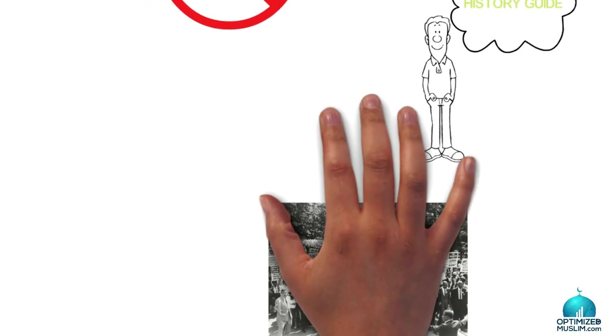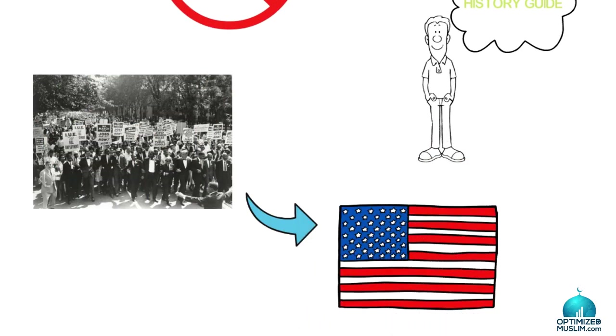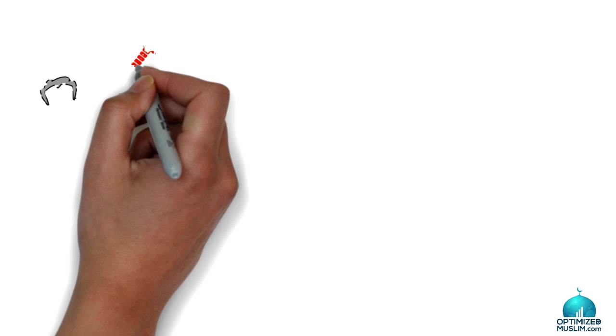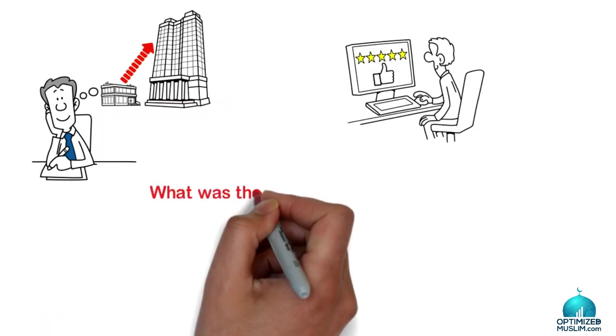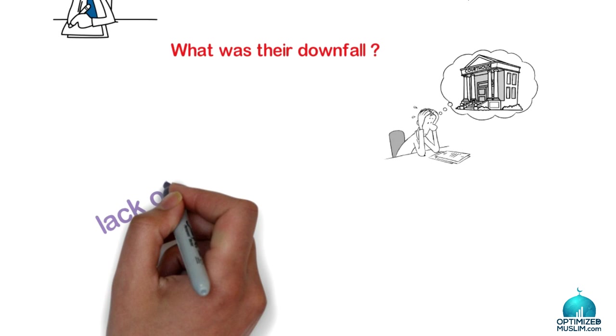I'm a history guy. Read the history of social movements in the United States of America. Anybody who got big or started doing really good work, what was their downfall? Nine times out of ten, it was lack of discipline.